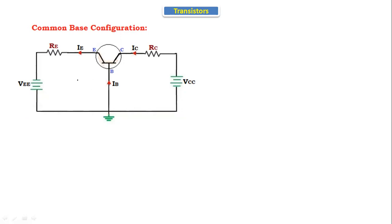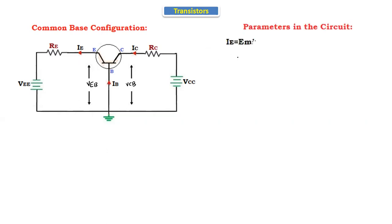Now let's see the parameters in the circuit. VEB is the voltage between emitter and the base. VCB is the voltage between collector and the base. As the emitter current direction is outside, it is called as an NPN transistor. I am taking the NPN transistor. In the NPN transistor, emitter current direction is outside and the base and the collector currents are inside.